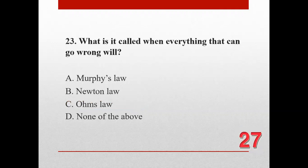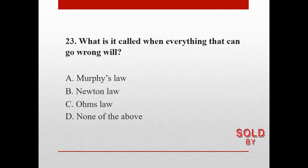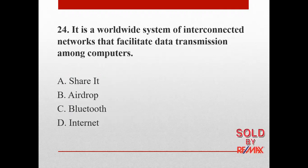Number twenty-three. What is it called when everything that can go wrong will? A. Murphy's Law, B. Newton Law, C. Ohm's Law, and D. None of the above. The correct answer is A. Murphy's Law.